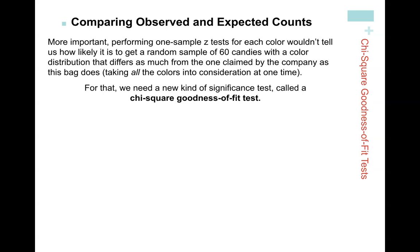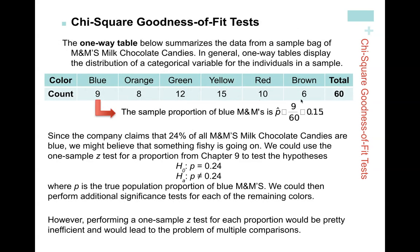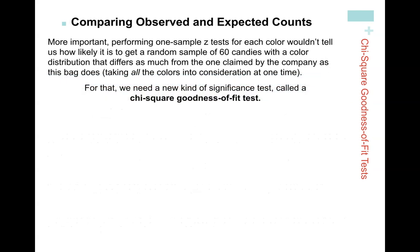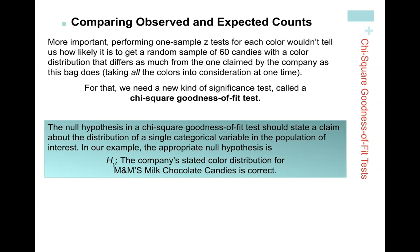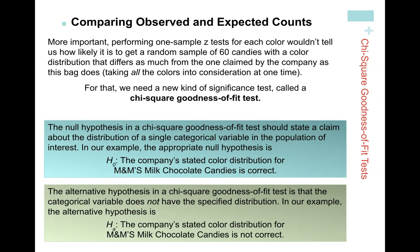The chi-square goodness of fit test compares all observed values to the hypothesized values, taking all colors into consideration at the same time. The null hypothesis is always that the claimed distribution is correct — in this case, the company's stated color distribution for M&Ms is correct. The alternative is that it's not correct. But this narrative form is not how I'll have you write your hypotheses.